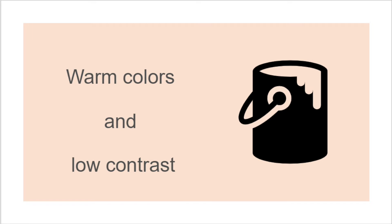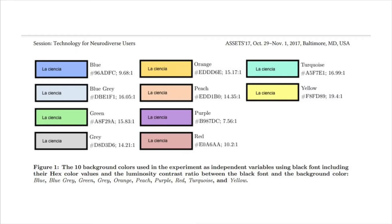Next: warm colors and low contrast. Eye strain is common amongst Dyslexic folks. One way to reduce this strain is through the use of color. Warm colors, such as peach, have been shown to have the most benefit and are linked to increased speed and comprehension.